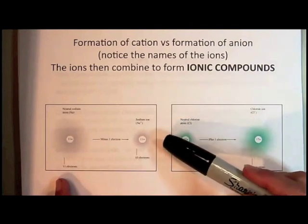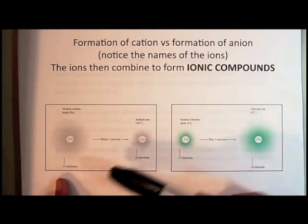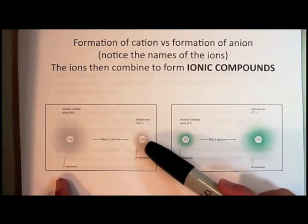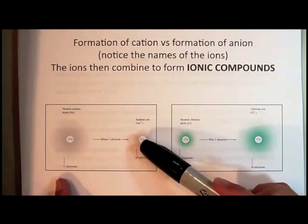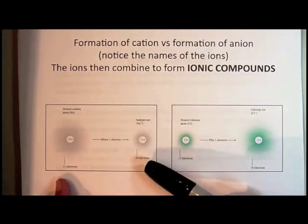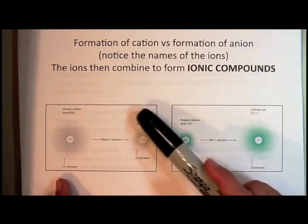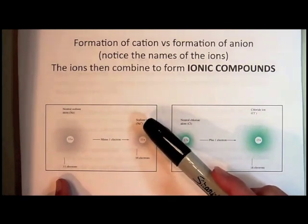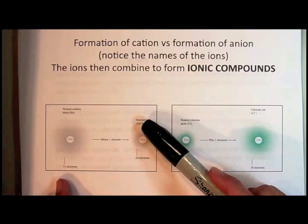What happens when the sodium atom becomes a sodium ion is that one electron leaves the sphere that is the atom. Since the number of protons equals the number of electrons in a neutral atom, as soon as you lose one electron, your atom is no longer neutral. If you only have 10 electrons and 11 protons, the overall ion is going to have a plus one charge. So you end up with something that's positively charged called a sodium ion.